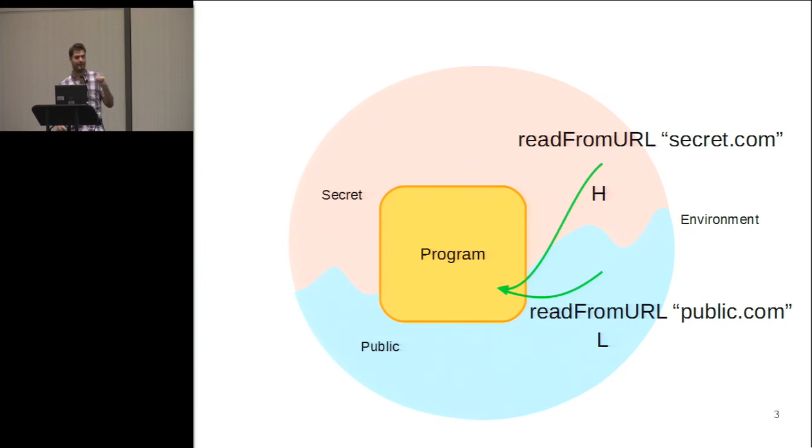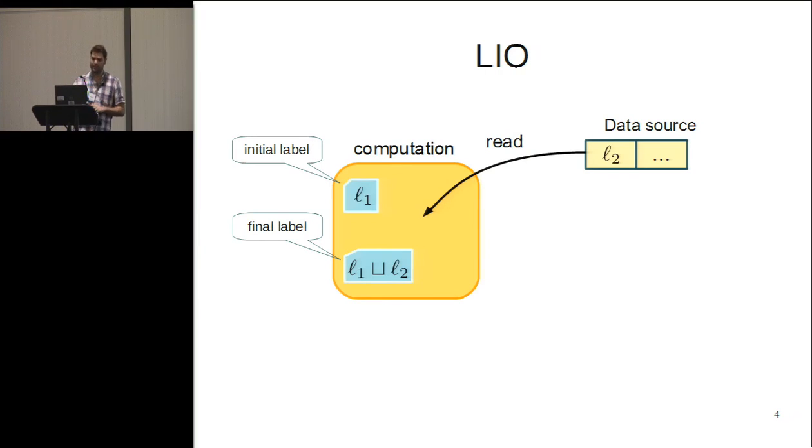We took as a starting point for this work a particular kind of enforcement called LIO. In LIO, we have data sources which are labeled, and these labels are basically annotations specifying the confidentiality of the values in the source. An LIO computation keeps, as part of its state, something called the current label, which might change for each step of the computation. The idea of this current label is that it's an upper bound on all the values that have been currently read up to that point. For example, if we have a computation that starts with current label L1 and we read something from label L2, we will update the current label to the least upper bound of L1 and L2.